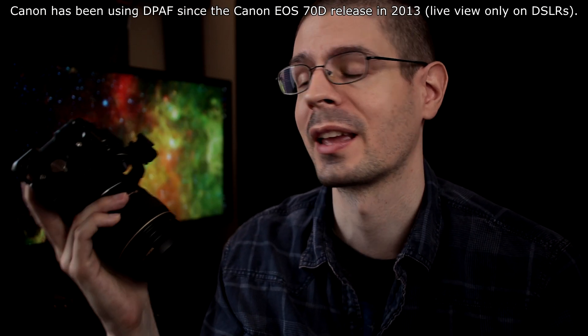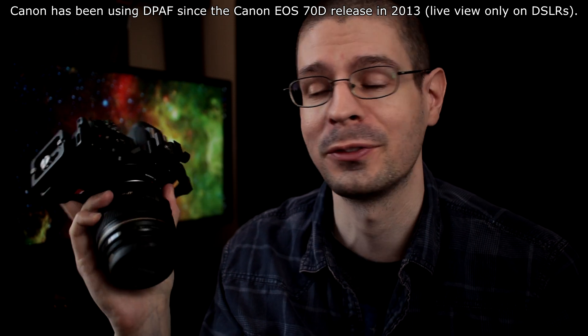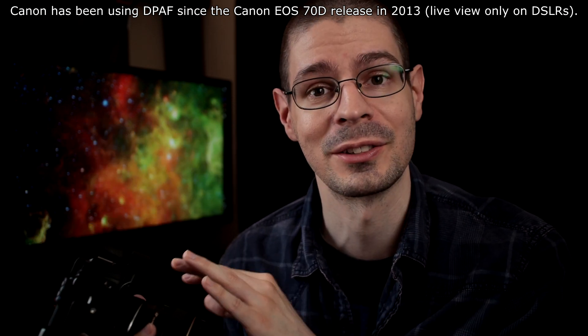It is Scott of Photography Banzai and here we're gonna talk about dual pixel autofocus on the Canon cameras. I have the M50 here. It has that dual pixel autofocus on the sensor itself.